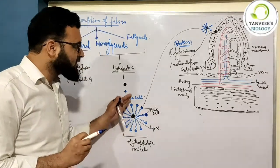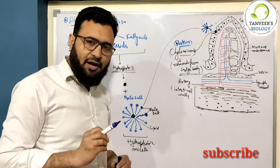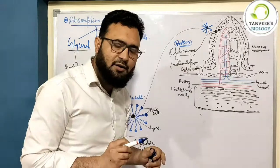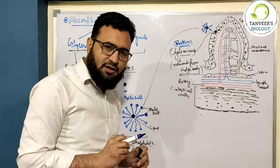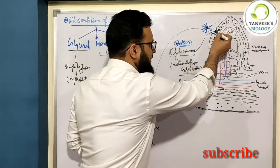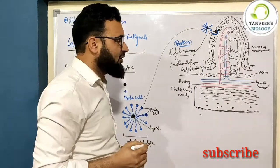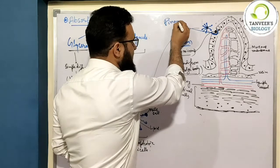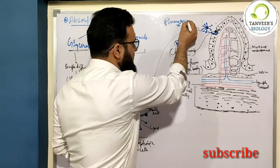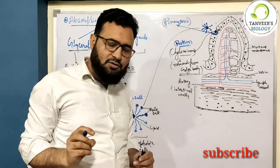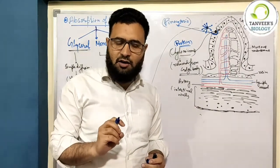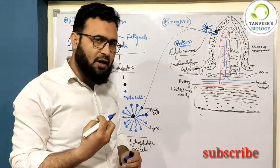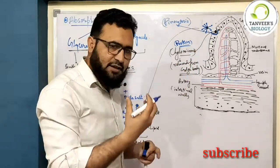What happens next? This micelle goes to the wall of the intestine — the mucosal cells. The mucosal cells absorb it through a process called pinocytosis. What is pinocytosis? Pinocytosis is the drinking of the cell — the cell absorbs liquid molecules by drinking them.